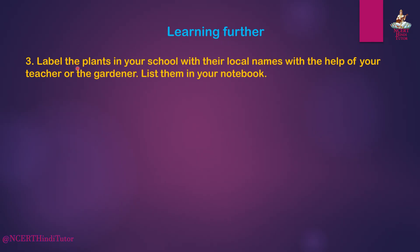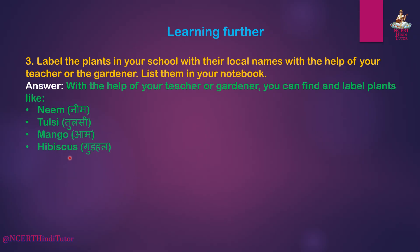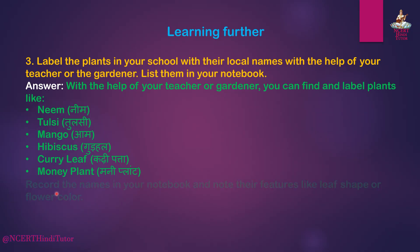Question 3: Label the plants in your school with their local names, with the help of your teacher or the gardener. List them in your notebook. Answer: With the help of your teacher or gardener, you can find and label plants like: 1st Neem, 2nd Tulsi, 3rd Mango (Aam), 4th Hibiscus (Gudhal), 5th Curry Leaf (Kadipatta), 6th Money Plant. Record the names in your notebook and note their features like leaf shape or flower color.